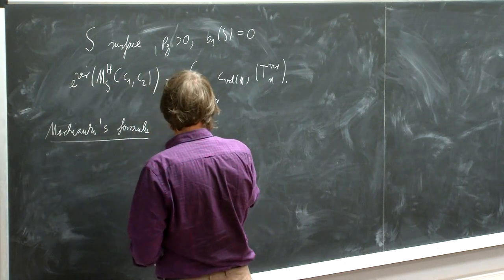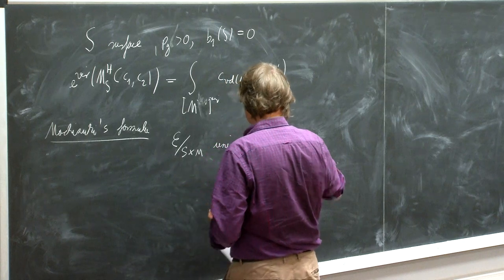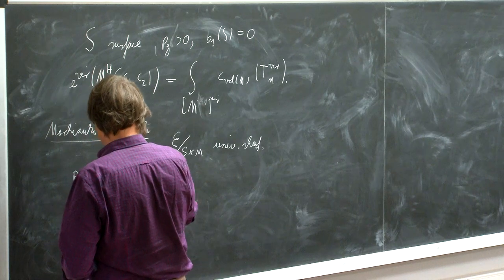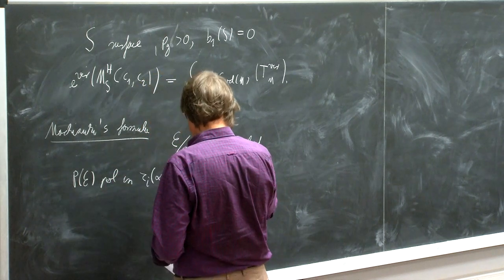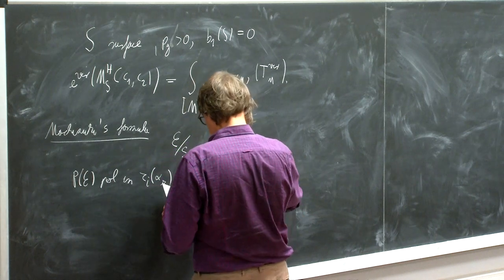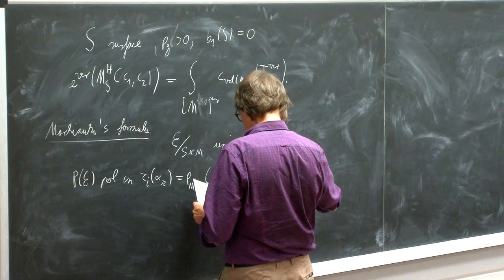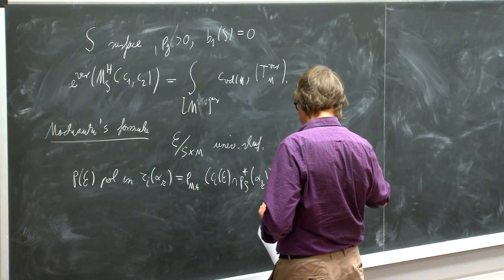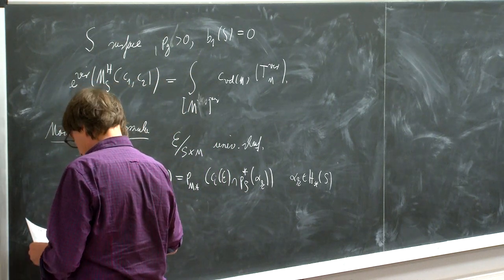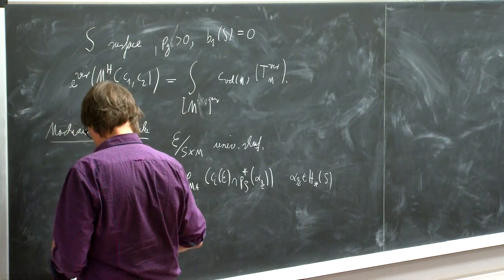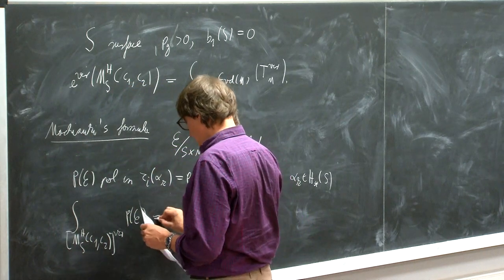Let me review the setup. If E over S times the moduli space is a universal sheaf, we can look at classes. If P of E is a polynomial in classes tau_E(alpha_k), which is the pushforward to the moduli space of some Chern class of the universal sheaf cupped with the pushforward of a class alpha_k in the homology of S, then we can compute the integral of this over the moduli space of sheaves in terms of Hilbert schemes of points.